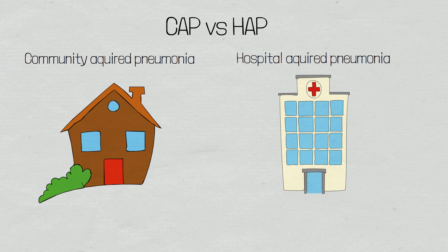A subcategory of hospital acquired pneumonia is ventilator acquired pneumonia — where a patient on a ventilator contracts pneumonia. Patients on a ventilator are intubated, and this tube bypasses the mucociliary escalator and the immunoglobulin A antibodies. Because these patients are intubated they are also sedated, meaning they lose their cough reflex, which normally provides forceful expulsion of foreign particles.